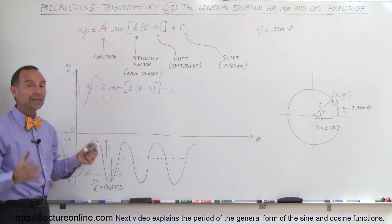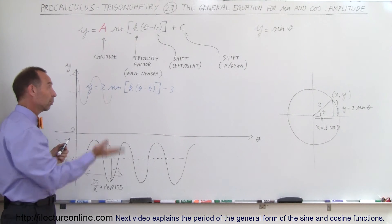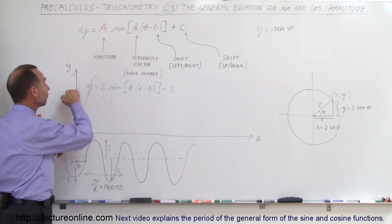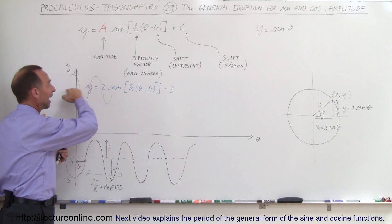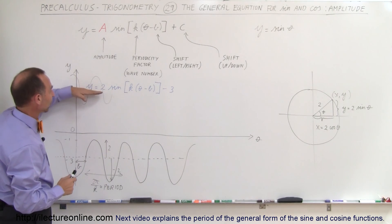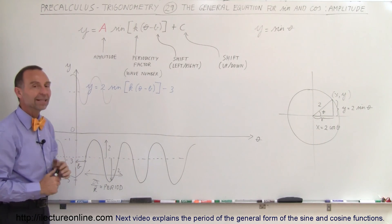So the amplitude is not an indication of whether or not the function will be positive or negative. It's simply an indication of how far it deviates from the average value, the value that's at the halfway point between the highest and the lowest point on the function. And the difference from the average value to the top or the average value to the bottom, that's called the amplitude.